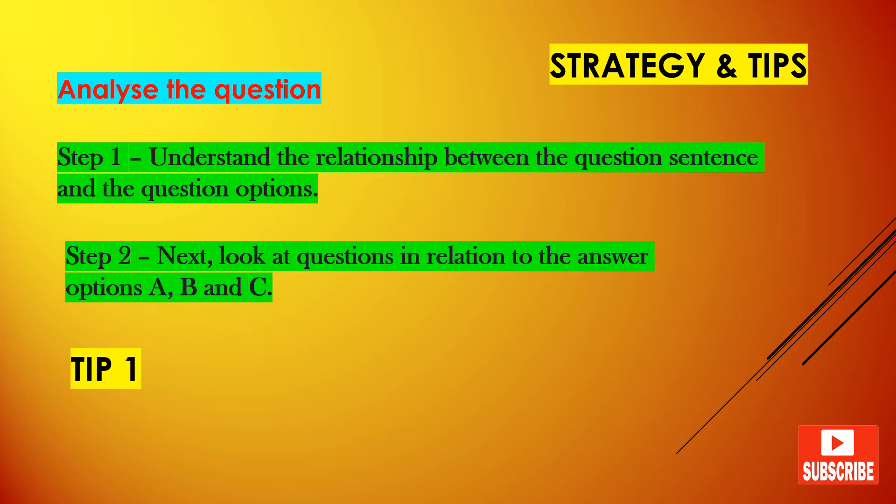Step one: you need to understand the relationship between the question sentence and the question options. Highlight the key part of the question sentence and think about how it relates to the question options. Step two: look at the questions in relation to the answer options A, B or C.